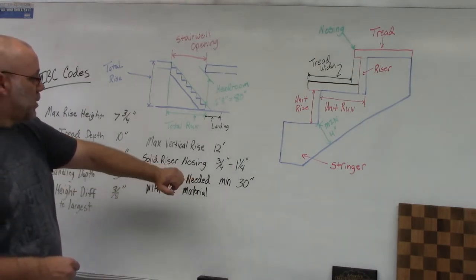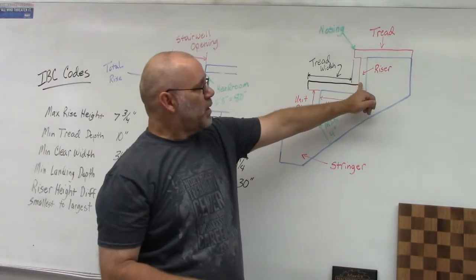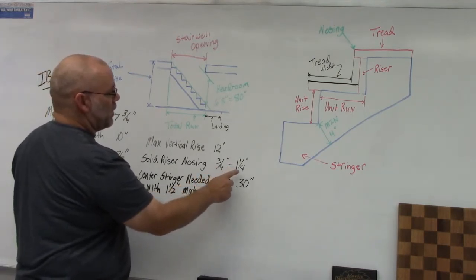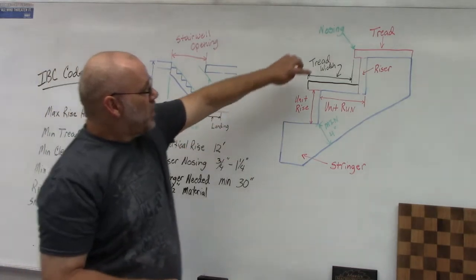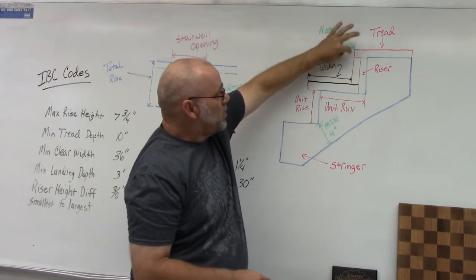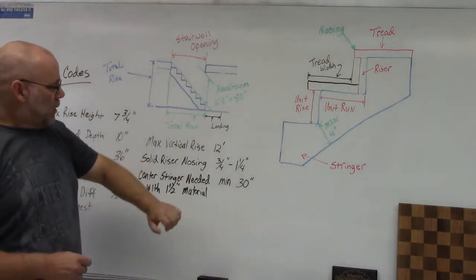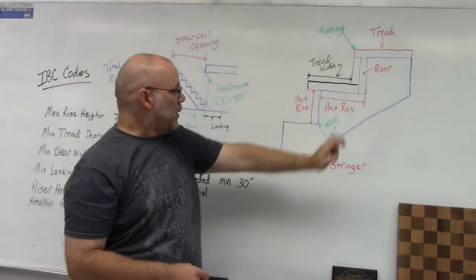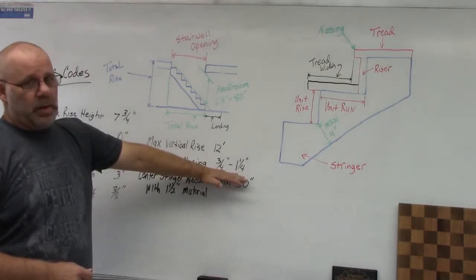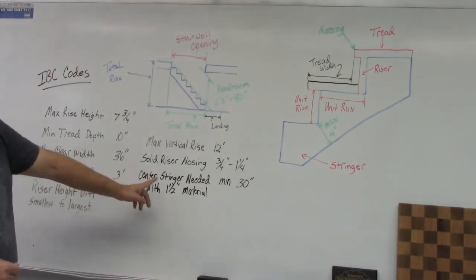The next code covers solid risers and nosing. If you have a solid riser, the nosing has to be somewhere between three-quarters of an inch and one and one-quarter inches. The nosing is the little bit of overhang that comes out past the riser to the end of the tread. With a solid riser, that distance must be between three-quarters and one and one-quarter inches.